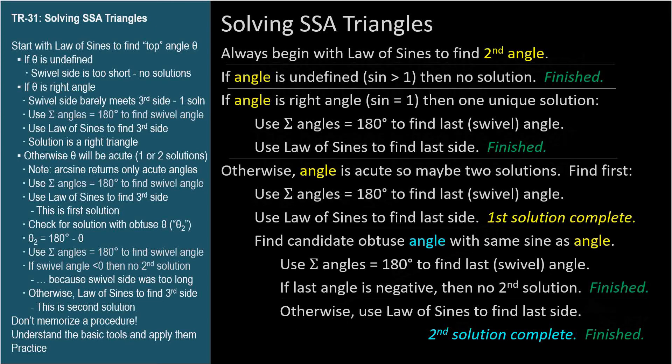So there doesn't have to be a complicated series of steps to take, or checks to perform. Just apply the law of sines and sum of angles. If the law of sines yields an undefined angle, the triangle has no solution. If the law of sines yields a right angle the first time, there's one solution, a right triangle. Use the sum of angles to find the last angle, and the law of sines again to find the last side of the right triangle.